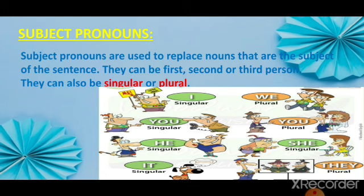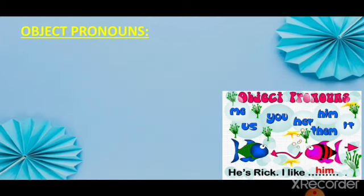I is singular. We is plural because it is for more than one person. You can be singular or plural. He is singular. She is singular. It is singular. And they is plural.